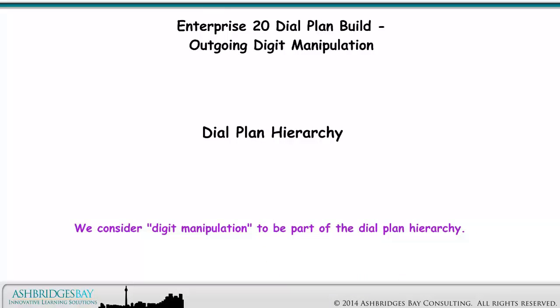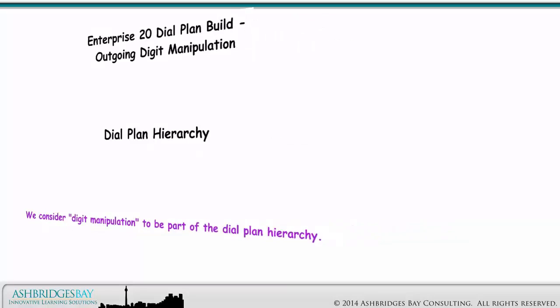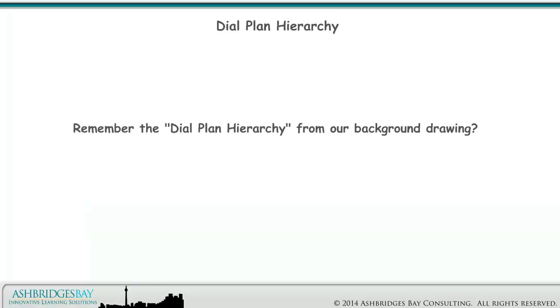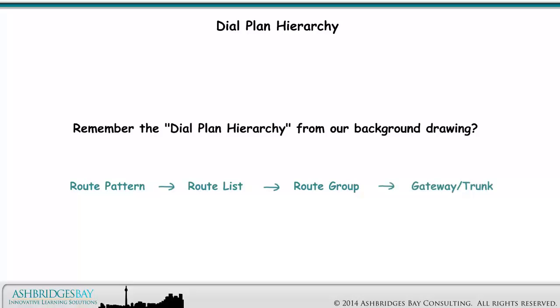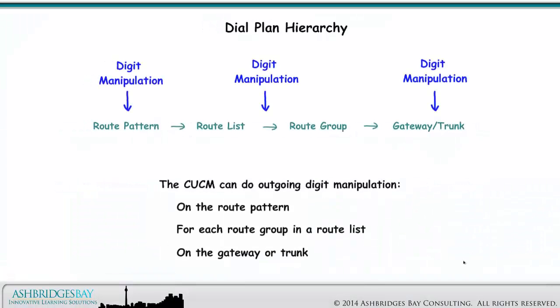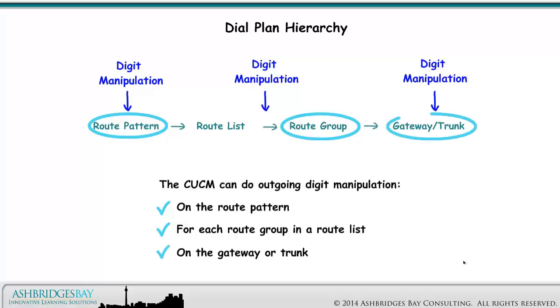We consider digit manipulation to be part of the dial plan hierarchy. Remember the dial plan hierarchy from our background drawing: we have route patterns that point to route lists that point to route groups that point to gateways or trunks. The CUCM can do outgoing digit manipulation on the route pattern, for each route group in a route list, and on the gateway or trunk.